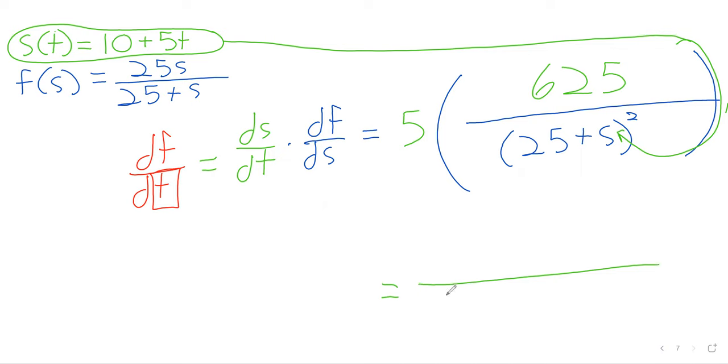So that leaves the denominator where we have to plug stuff in. And here, I think it's really helping us if we don't FOIL the denominator. If we replace s with 10 plus 5t, we get 35 plus 5t. So saying that again, we are replacing s with 10 plus 5t.